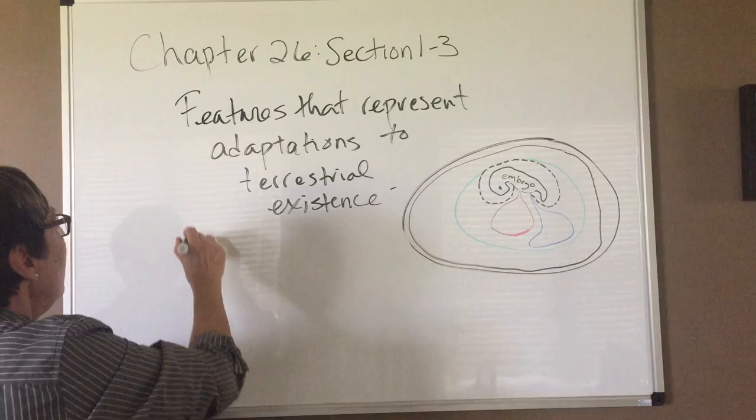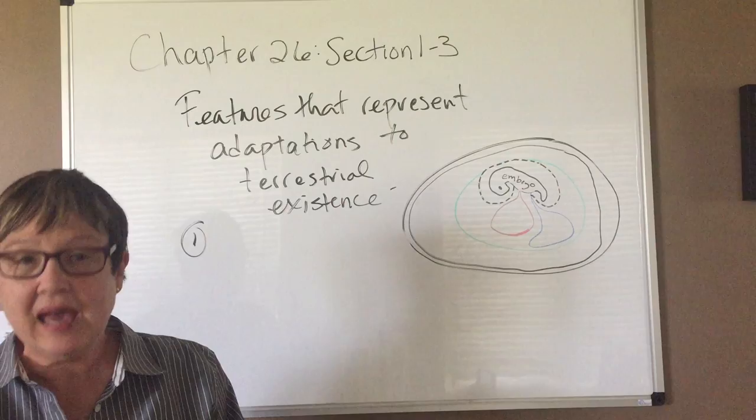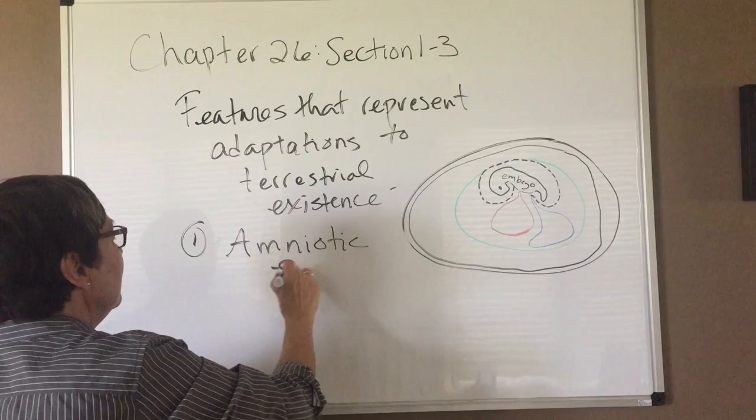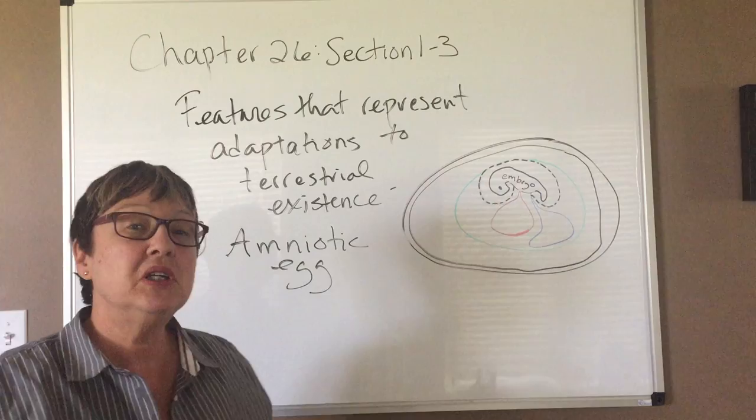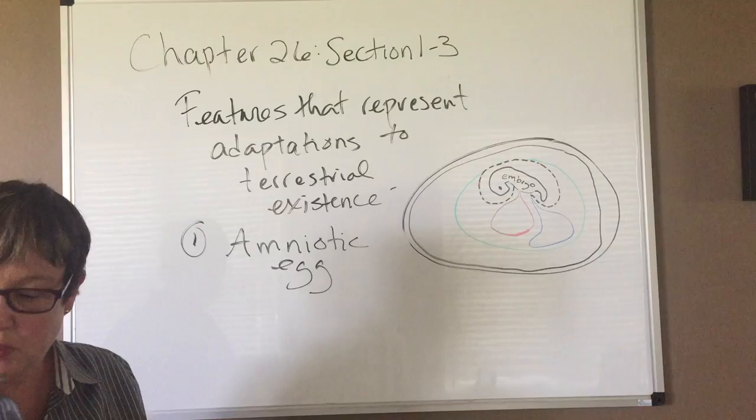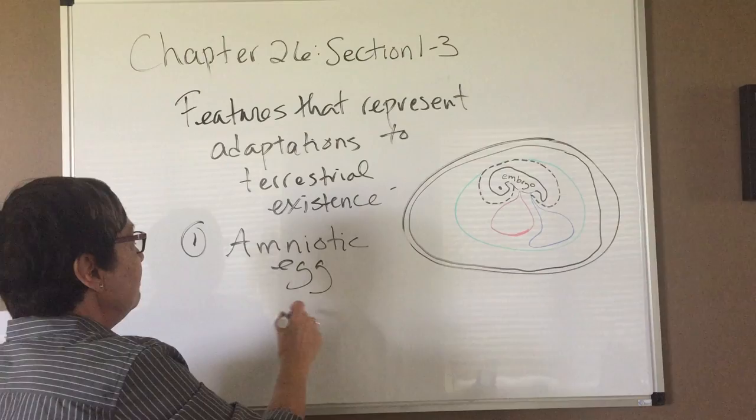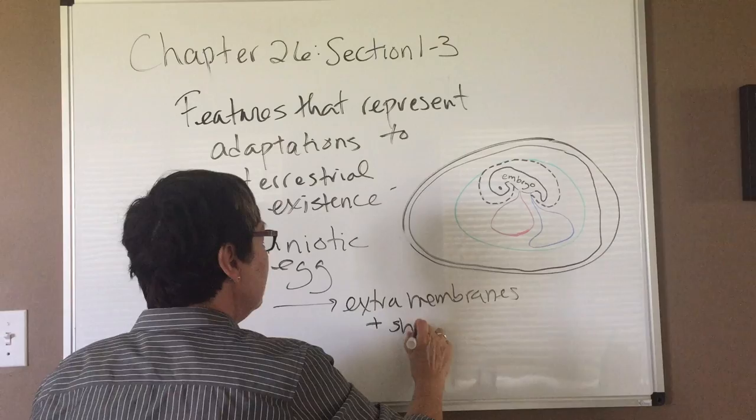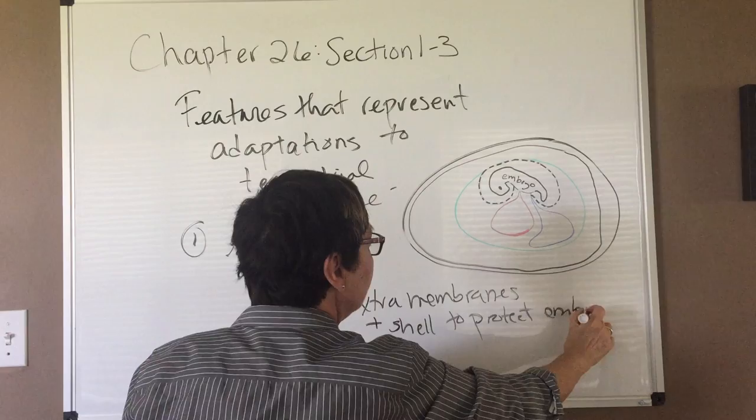So these are features that represent adaptations to terrestrial existence. One of the most important characteristics that these three groups have is the development of an egg that's called the amniotic egg. I have a diagram over here. I'm going to talk in a little more detail about what makes this egg so special. But at this point, we're just going to say that it has extra membranes plus a shell to protect the embryo.